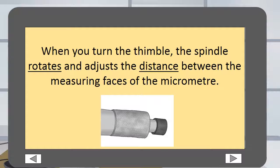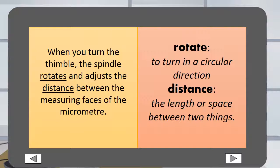When you turn the thimble, the spindle rotates and adjusts the distance between the measuring faces of the micrometer. Rotate means to turn in a circular direction. Distance is the length or space between two things.